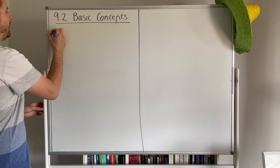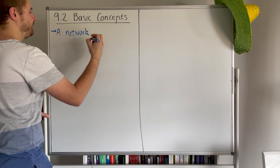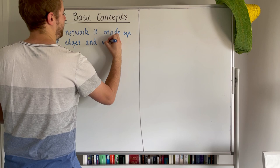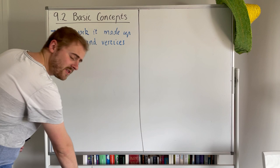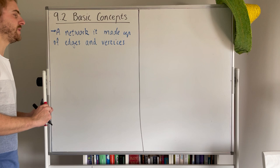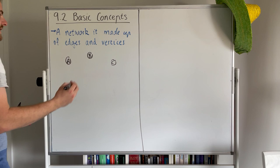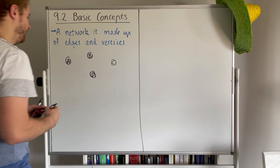A network or graph is made up of edges and vertices. Sometimes the vertices are called nodes depending on the resource that you're looking at. To put it very simply, the vertices or the nodes look like this. They can sometimes have just dots with the letter next to it but typically they will be represented by some sort of letter.